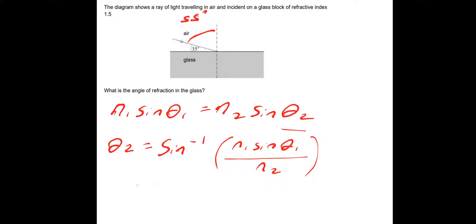So we just need to put some numbers in. It's inverse sine, N1 is air so that's just 1, times sine 55, divided by the refractive index of the second material, which is the glass, which is 1.5.